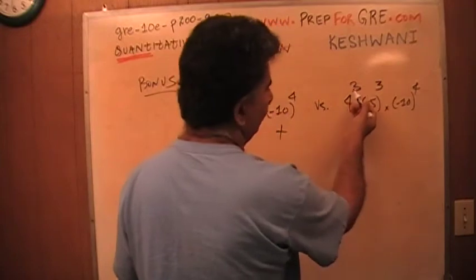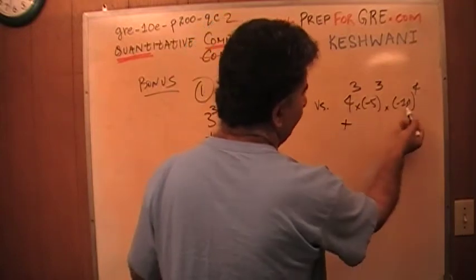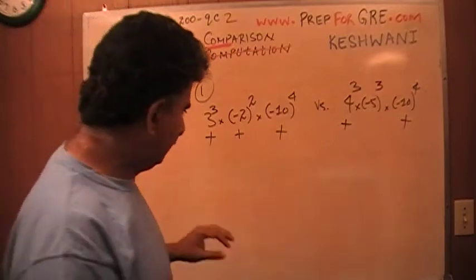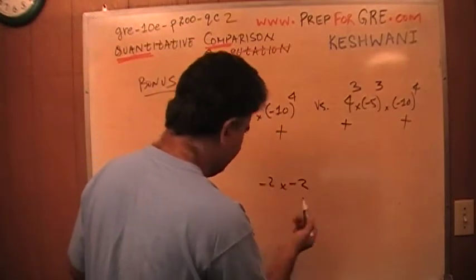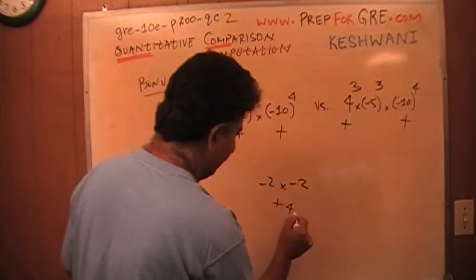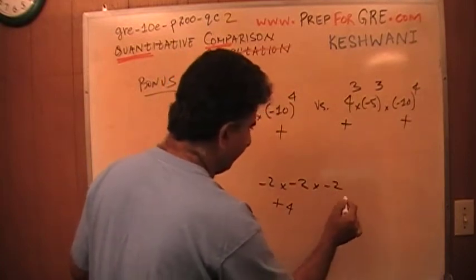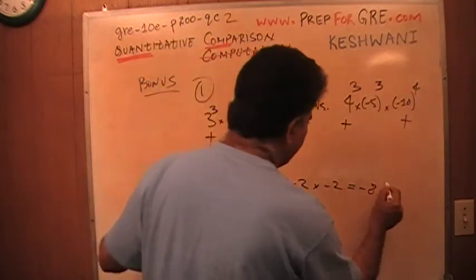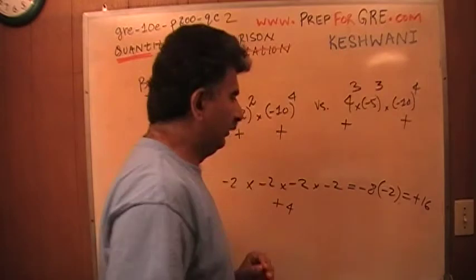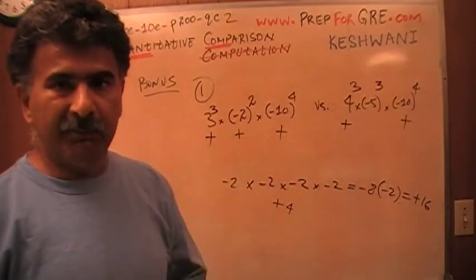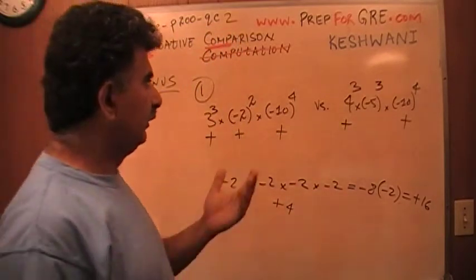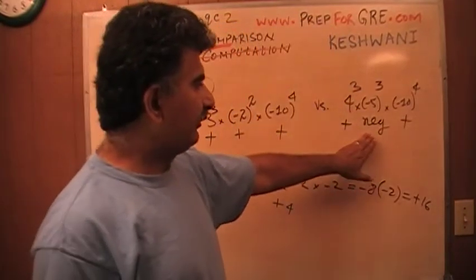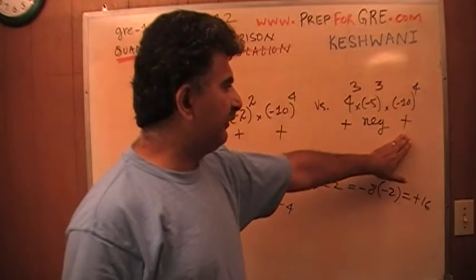Here, we have 4 raised to 3rd is a positive. Negative 10 raised to an even power. A negative number raised to an even power is going to be a positive number because negative 2 times negative 2 is positive 4. And then if you multiply it again by negative 2, it becomes negative 8. And then if you multiply again by negative 2, it becomes positive 16 again. So any negative number raised to an even power is a positive number. This on the other hand is a negative number. So positive times negative will be negative.